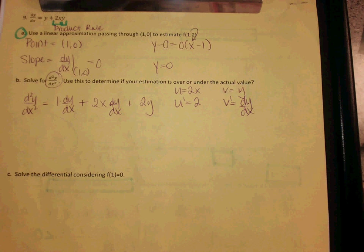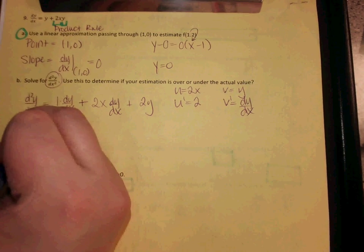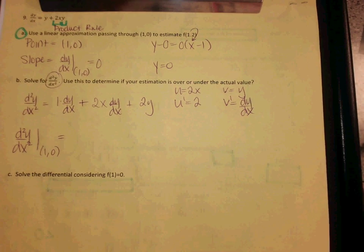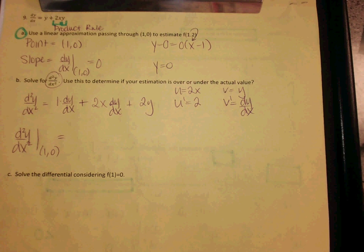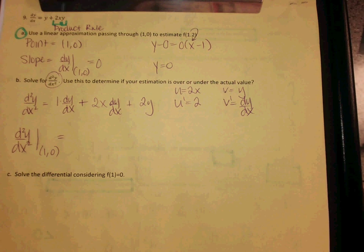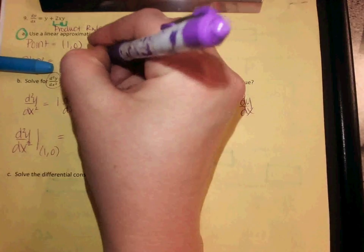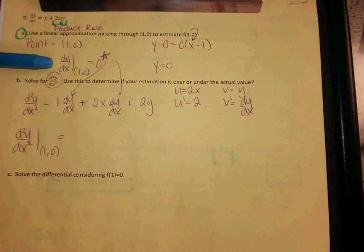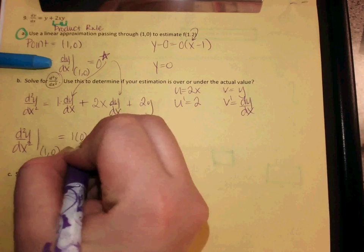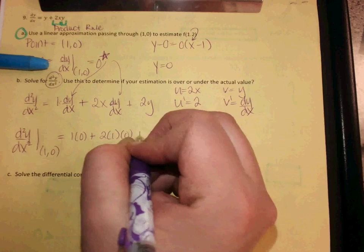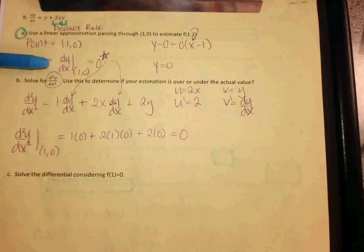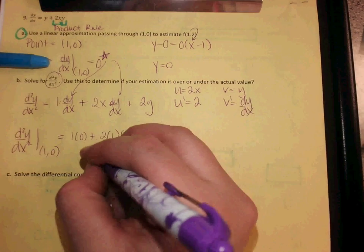Okay, then from here, it says use it to determine if your estimation is over or under. What am I plugging in for my point? d²y/dx at (1, 0). Okay, remember your notation there. Now, remember, you should not be plugging into dy/dx again. What was dy/dx at (1, 0)? 0. So remember, this is what I'm going to plug in here and here, because I already found that. So this is going to be 1 times 0, plus 2 times 1 times 0, plus 2 times 0. What do we get for our concavity? 0. Can we tell if it's concave up or concave down? Well, then you would say not enough information.